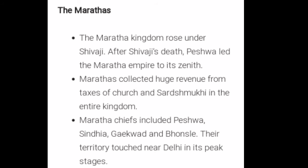After that, the Maratha Kingdom rose under Shivaji Maharaj. After Shivaji Maharaj's death, the Peshwas led the Maratha Empire to its zenith. The Marathas collected huge revenue from taxes — Chauth and Sardeshmukhi — across the entire kingdom. The Maratha confederacy included the Peshwa, Scindia, Gaikwad, and Bhonsle, and their territory touched near Delhi at its peak.